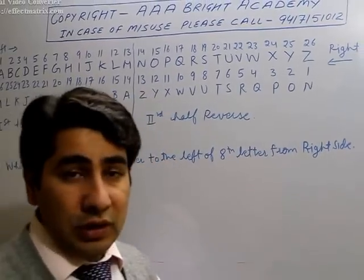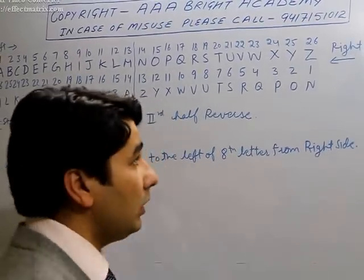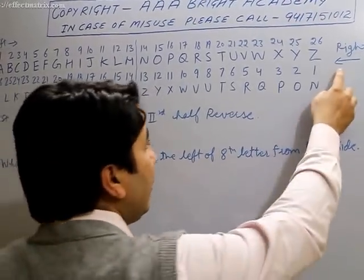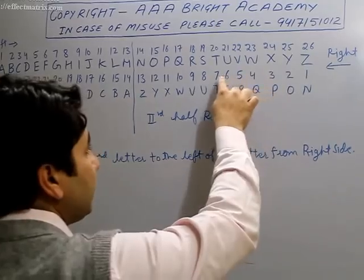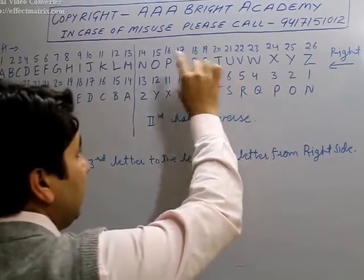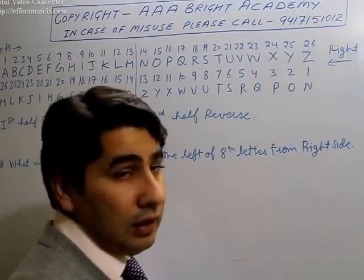But if you have a question: which is the eighth letter from the right side? Then start from the right. Right side: 1, 2, 3, 4, 5, 6, 7, 8 — that means 8 from the right is S. So S is the correct answer.